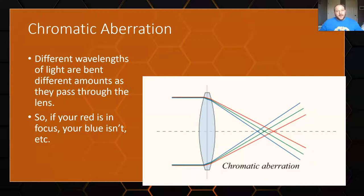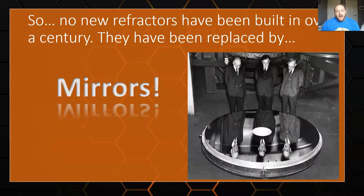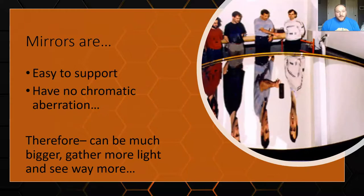So with those three main problems — you can only get so big, you have chromatic aberration, and you have really long focal lengths — modern telescopes are almost exclusively reflectors. Reflectors are easy to support, they don't have any chromatic aberration, and therefore they can be much, much bigger, gather more light, and there are a whole bunch of benefits to them.